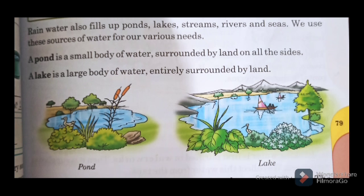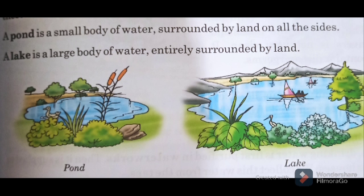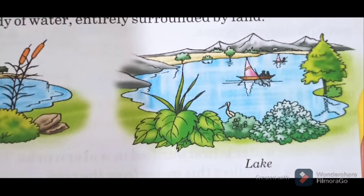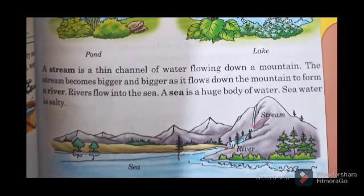What is a pond? A pond is a small body of water surrounded by land on all sides, as you can see in this picture. A lake is a large body of water entirely surrounded by land, as you can see in this picture. A stream is a thin channel of water flowing down a mountain. The stream becomes bigger and bigger as it flows down the mountain to form a river. Rivers flow into the sea.